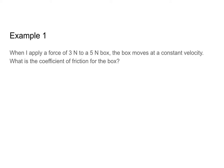When I apply a force of three newtons to a five newton box, the box moves at a constant velocity. What is the coefficient of friction for the box? The box is moving at a constant velocity, so the net force acting on the box is zero because it's in equilibrium. The gravitational force on the box is five newtons and my applied force is three newtons. Since the box is in equilibrium, there must be a normal force balancing the gravitational force and a frictional force in the horizontal direction balancing the applied force.